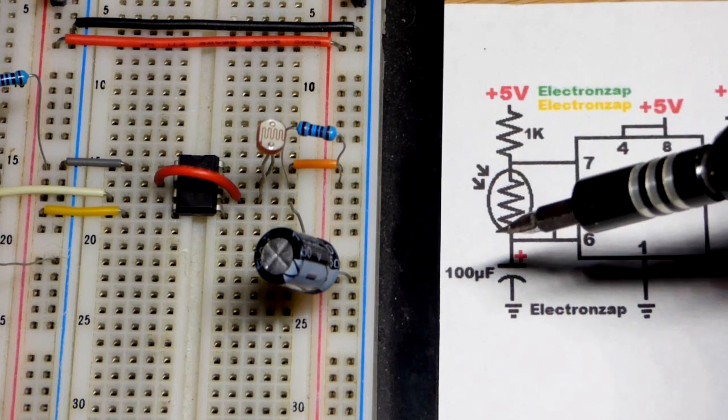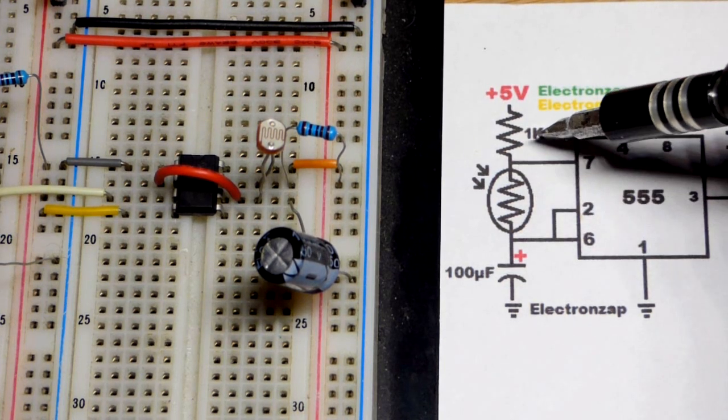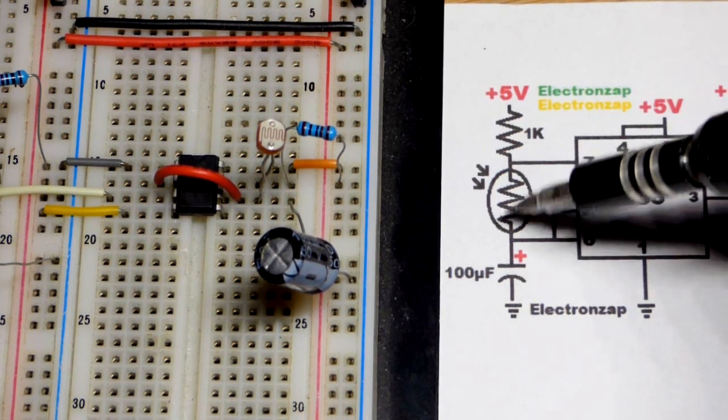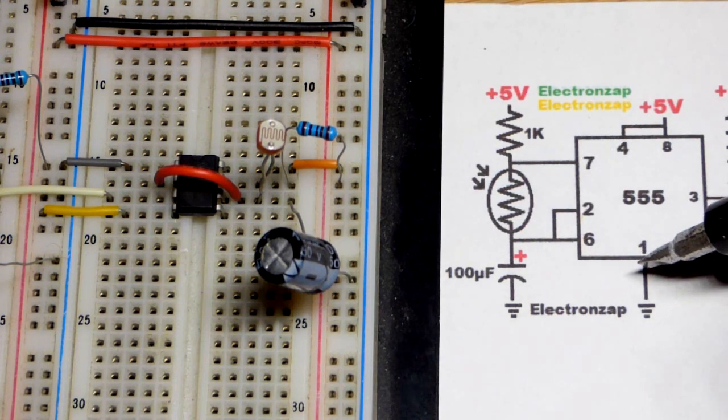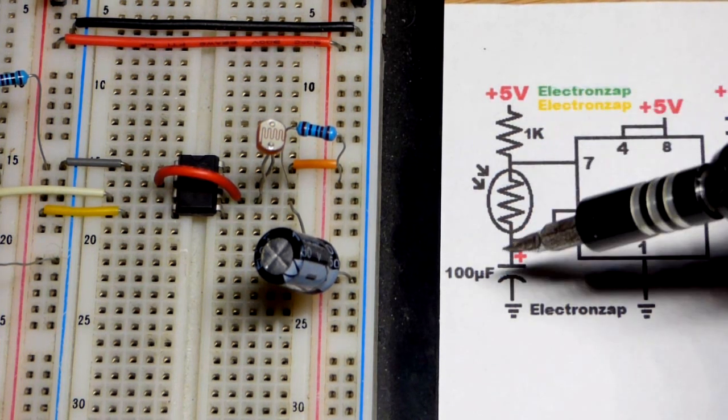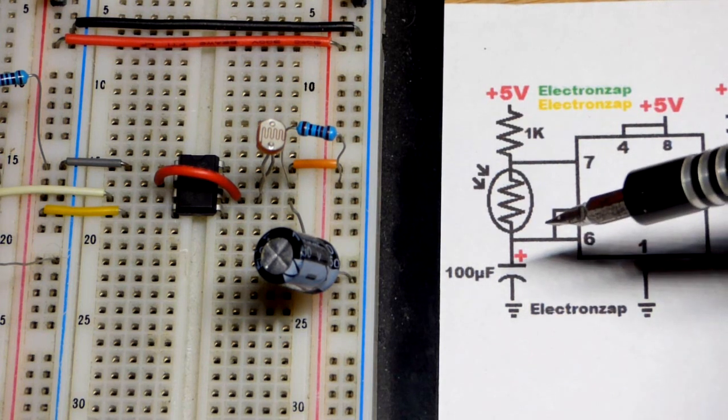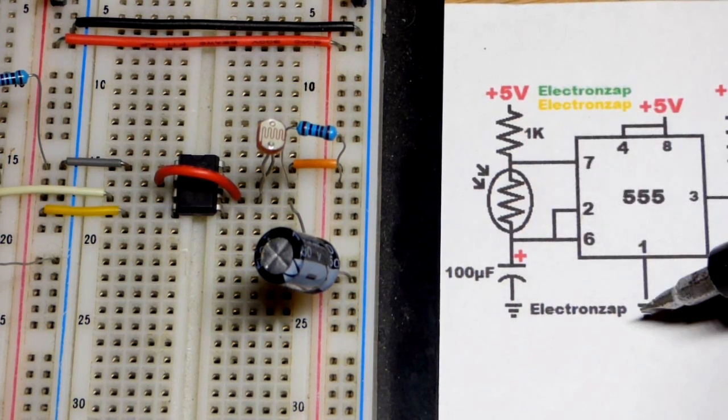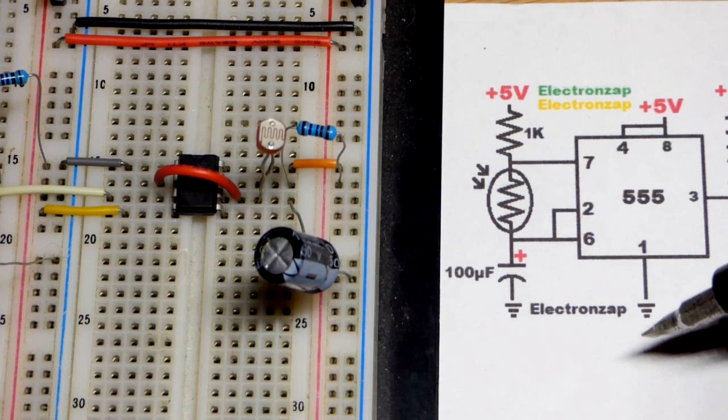It actually takes longer to charge than discharge, but not by a whole ton because that's 1,000 ohms, and usually light-dependent resistors are well above 1,000. But in any case, we got the charge up to two-thirds supply voltage, and then discharge down to one-third. Just keeps alternating back and forth like that.